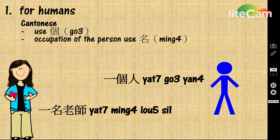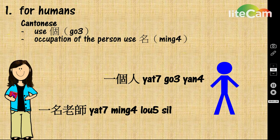一名老師, 一個人. And if we want to show others how many people there are, we will use the word 個 to indicate. 個 is the quantifier to tell you how many people. For one person, we would say 一個人. But if we want to tell others we have 10 people, we would say 十個人.